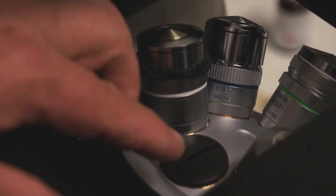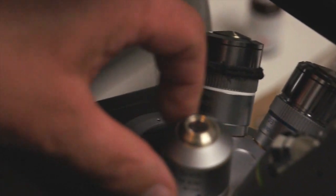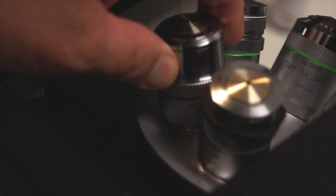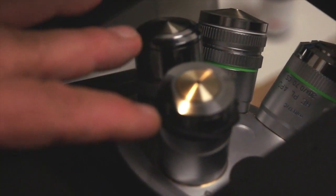Below the stage is the nose piece which holds all of the objectives. And you can see that there are quite a few objectives on this nose piece. This is a motorized nose piece but we will be manipulating it manually to choose the different objectives that we work with.